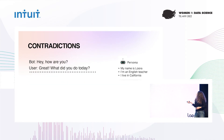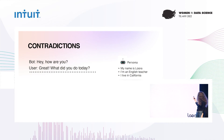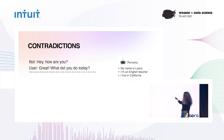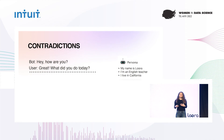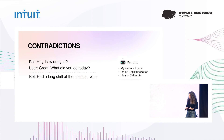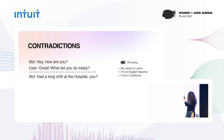Back to our problem of persona contradictions. Say the persona we want to optimize for is: my name is Laura, I'm an English teacher, and I live in California. And say the context given to the model is 'Hi, how are you? Great, what did you do today?' So I stop and generate a whole response, and I get 'I had a long shift at the hospital, how about you?' — which is of course contrary to my English teaching persona.